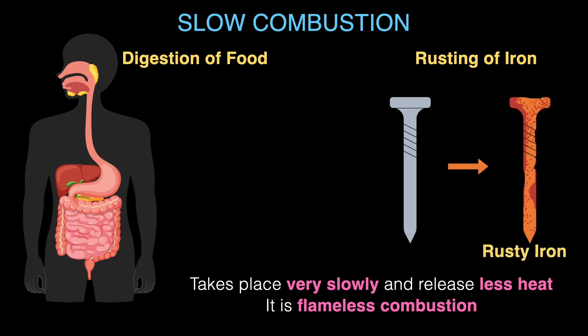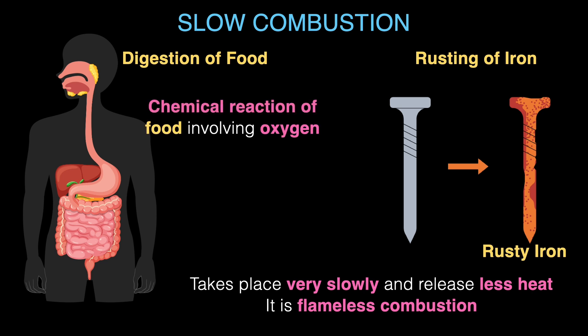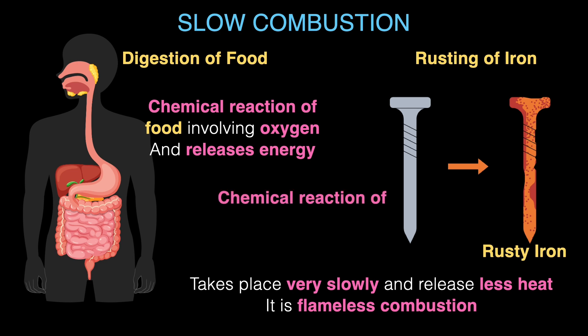The rusty iron you see here is a result of slow combustion. It's fascinating that digestion in our stomach and rusting of iron are basically the same process. The only difference is the substance undergoing combustion. In digestion, food undergoes a chemical reaction involving oxygen and releases energy. Similarly, in rusting of iron, iron undergoes a chemical reaction involving oxygen and releases energy.